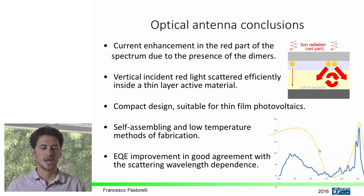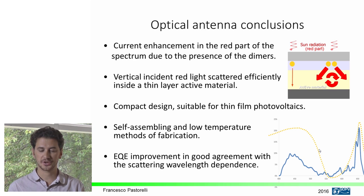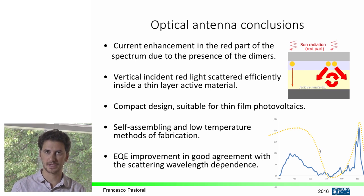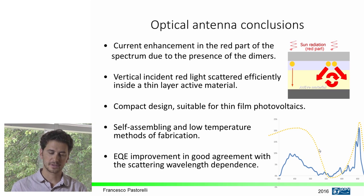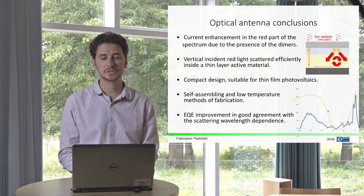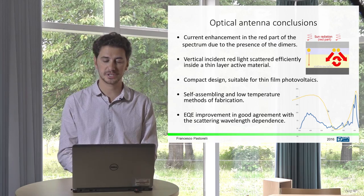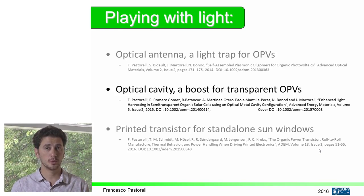Comparing with the percentage difference in scattering efficiency between the two nanoparticle types, the behavior matches nicely with the external quantum efficiency. The light at 650 nanometers is strongly scattered by the dimer while for a single nanoparticle you don't observe that. Concluding this first part on optical antennas: the current enhancement in the red part of the spectrum is due to the presence of dimers, with red light scattered efficiently inside the thin active layer. This is realized in a compact design suitable for thin photovoltaics, all self-assembled at low temperature with a maximum of 150°C. The most important conclusion is that the external quantum efficiency improvement is in good agreement with the scattering wavelength dependence of the nanoparticles.